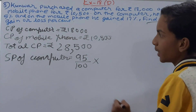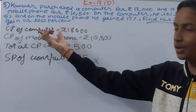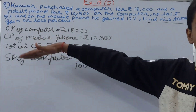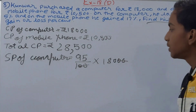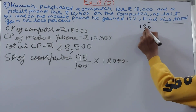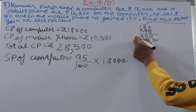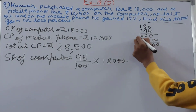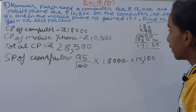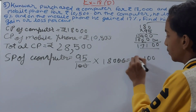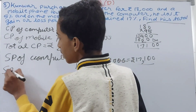Watch out — when finding the selling price of the computer, use only the cost price of the computer (₹18,000), not the mobile phone's cost price or the total cost price. Cancelling the two zeros: 180 × 95 = 17,100. So the selling price of the computer is ₹17,100.